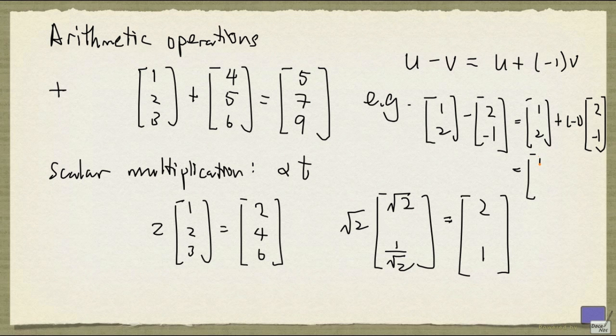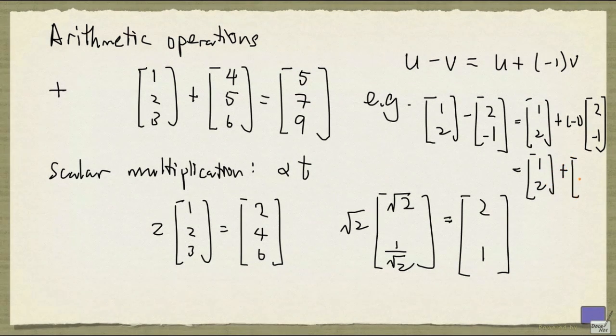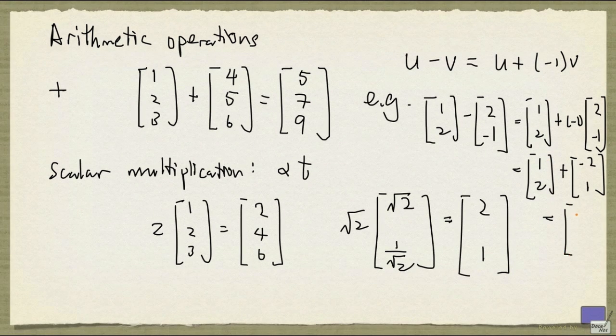And this gives 1, 2, and this gives minus 2 and 1. And if you work this out, again, you add component-wise. So 1 plus minus 2 is minus 1, and 2 plus 1 is 3. And that's the answer.